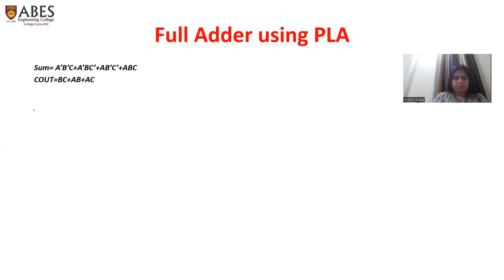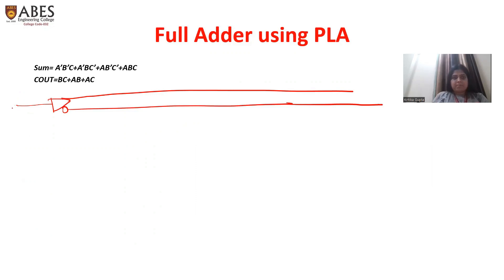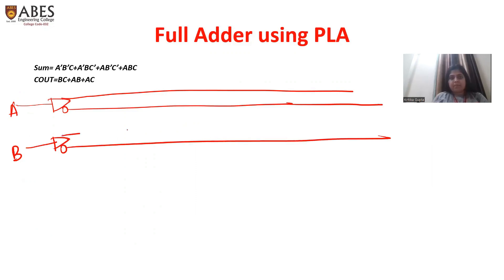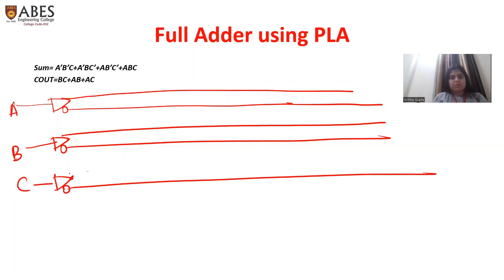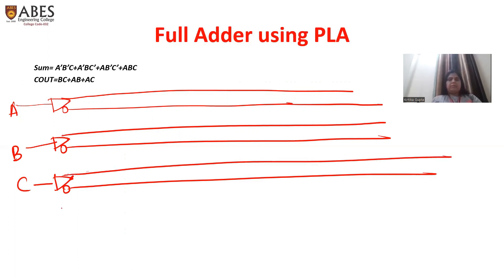So we require three input buffers because we have three variables. From the input buffers I am getting A in the uncompleted form, and A-bar in the complemented form. Similarly B, B-bar, C, and C-bar. The total number of programmable AND gates equals to the total number of distinct minterms - which is seven distinct minterms.